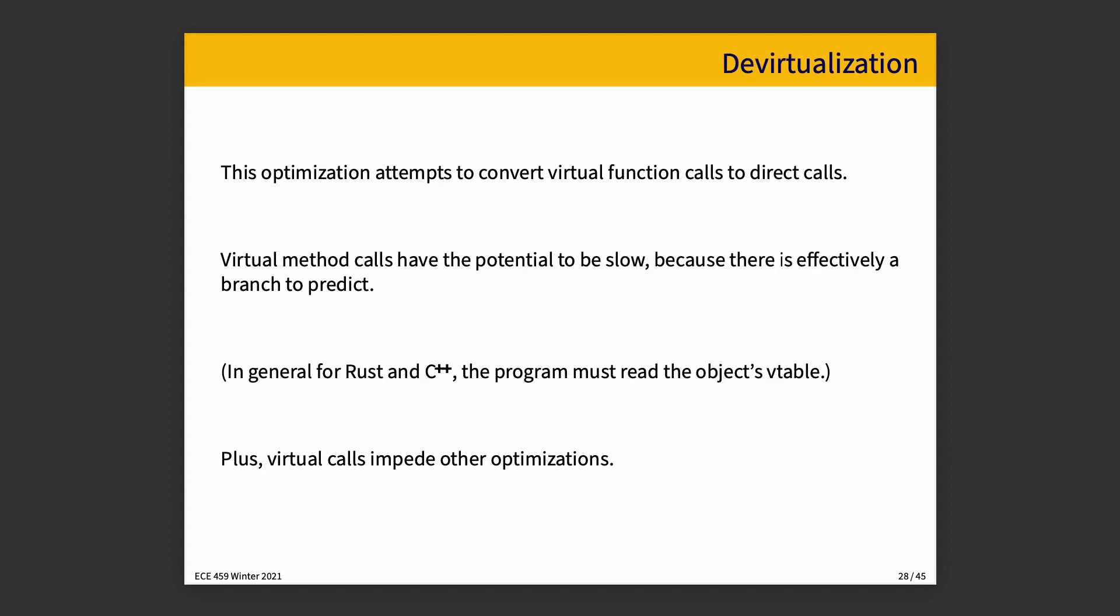Devirtualization is kind of a specific version of the call graph information being put to use. And this is trying to convert a virtual function call to a direct call. And virtual method calls have a potential for being slow because there's a branch to predict. If we see, okay, we're going to call vehicle.honk, is that a car or is it a truck? We're going to make a prediction and we could be wrong. So, in general, to actually find out where we're going to go, we have to read the object's vtable, which says, like, hey, here's the executable code for this version. That'll get the job done. And it can also impede some other optimizations where you can say, well, I'm not sure what's going to happen here. So, I'm just going to assume something. And the compiler, when it doesn't know, will take the safe option. And the safe option is usually slower than the alternative.